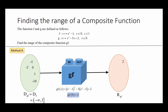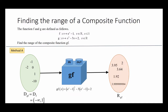Similarly, if we input the value of negative 1 into our machine, it will act on this value and come up with an output, in this case 3.64. Again, this value will form part of the set of values known as the range of gf. This will follow the same for the other values we have given as examples from the domain of gf.